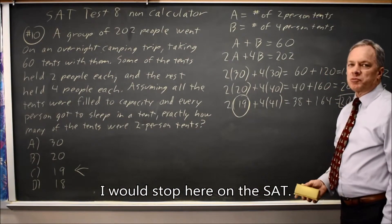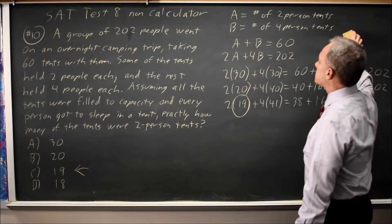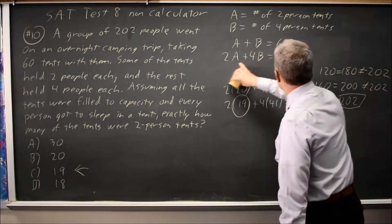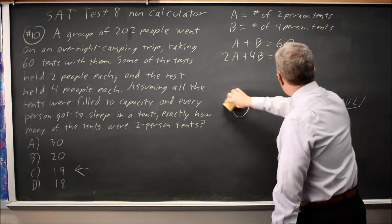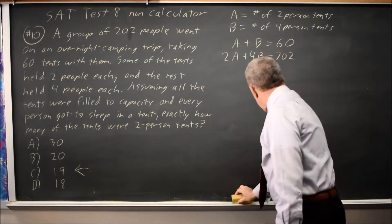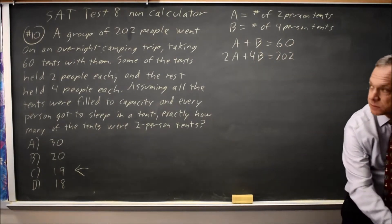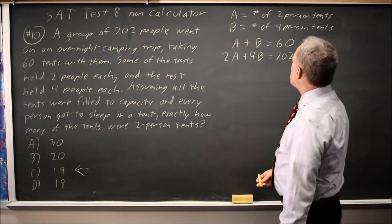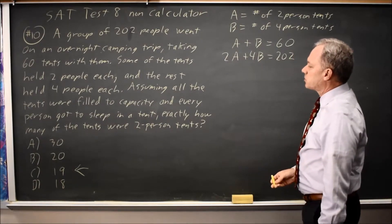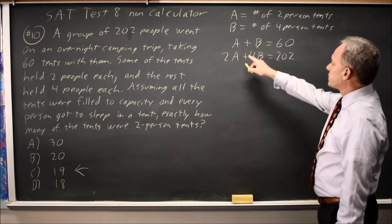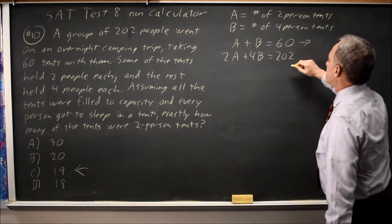We won't always have multiple choice, so it's important to practice solving systems using the more algebraic approach. Let's take a look at that here. One option is, since I'm solving for A the number of two-person tents, let's eliminate the variable B.